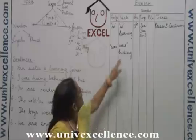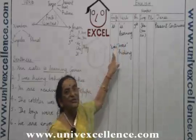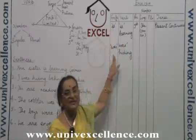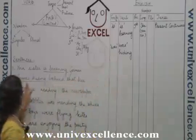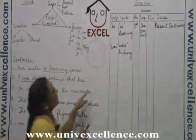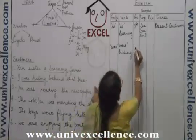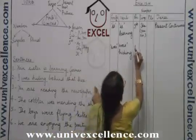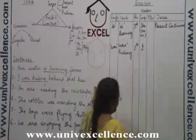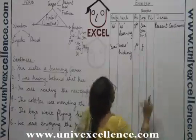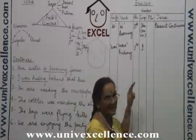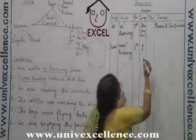'Was' has been placed under the finite verb column. 'Was' has been used with 'I,' which is first person singular number, and the tense is past continuous.